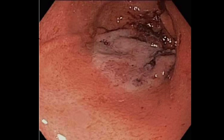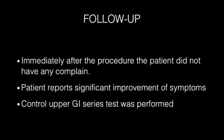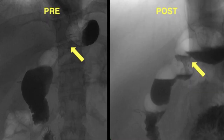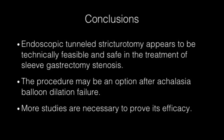After the stricturotomy and closure of the defect, we reevaluated the sleeve. We can now observe an improvement of the stenotic area, as seen in the picture. After the procedure, the patient did not have any complaints. At three months' follow-up, the patient reported significant improvement of symptoms. We performed a post-procedure upper GI series and observed resolution of the stenosis when comparing with the pre-procedure barium swallow. We conclude that endoscopic tunnel stricturotomy appears to be technically feasible and safe in the treatment of sleeve gastrectomy stenosis. The procedure may be an option after Achalasia Balloon Dilation failure. More studies are necessary to prove its efficacy.